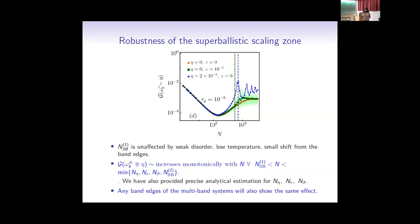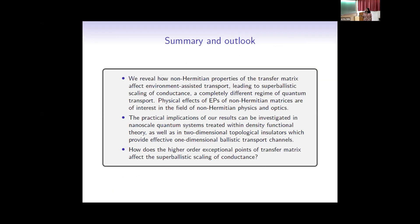We have talked only about band edges so far. Regarding the robustness of super-ballistic scaling: N_SB1 is unaffected by weak disorder, low temperature, and small shifts from the band edges. But N_SB2 depends on weak disorder, low temperature, and small shifts from band edges. Any band edges of a multiband system will show the same effect. In summary, we reveal how the non-Hermitian properties of the transfer matrix and the weak incoherent effect together give rise to this anomalous super-ballistic scaling of conductance.